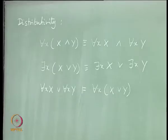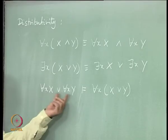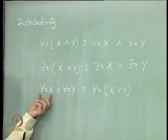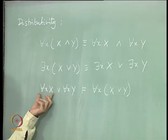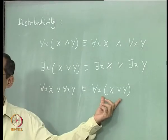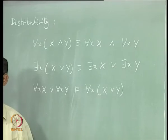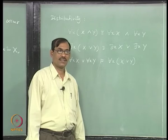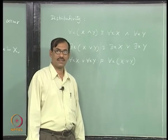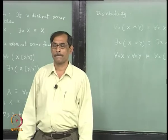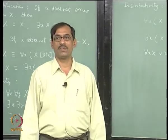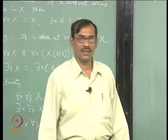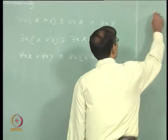If you change this AND to OR, then this may not hold, but at least one side will hold: for each x, x, or for each x, y, entails for each x, x or y. Because once you say this or this, at least one of these is true in any state. But the converse does not hold. Can you give an example? It should be easy.